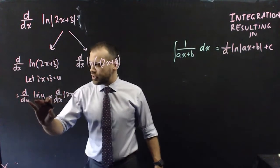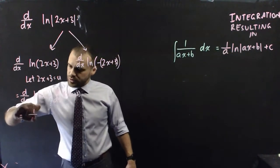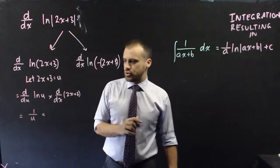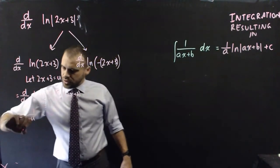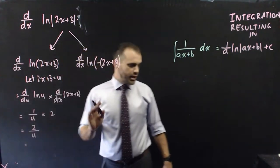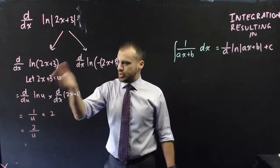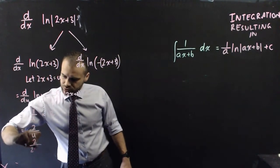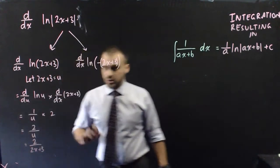Now, the derivative of ln u, you should know, is 1 on u. And the derivative of 2x plus 3 is 2. So, what we're left with is 2 on u, but our u is not u, it's 2x plus 3. So, we're left with 2 on 2x plus 3.